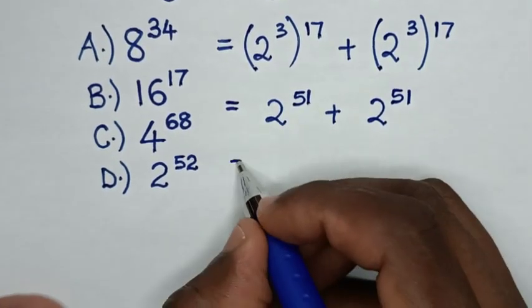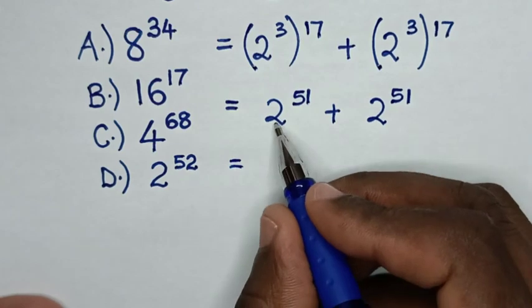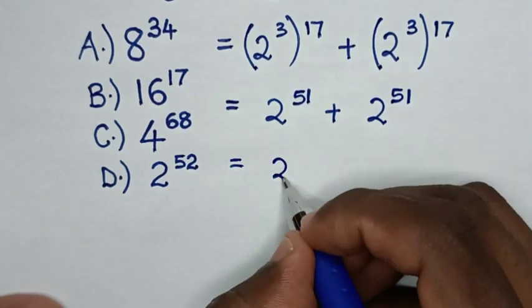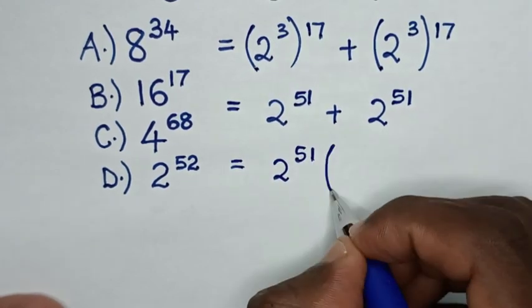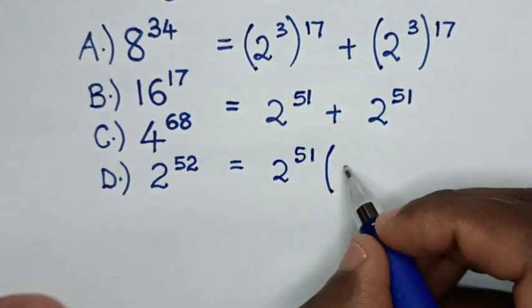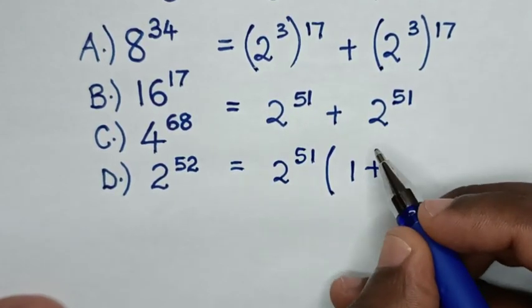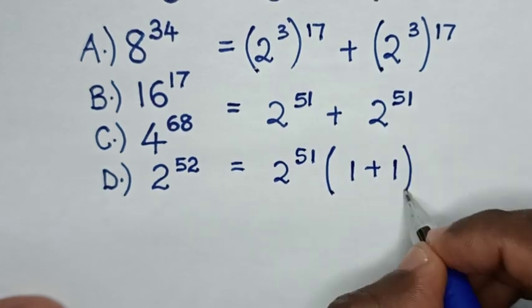Then 2 power of 51 is common, so we take 2 power of 51 out of the bracket. 2 power of 51 divided by 2 power of 51 is 1, plus 2 power of 51 divided by 2 power of 51 is 1.